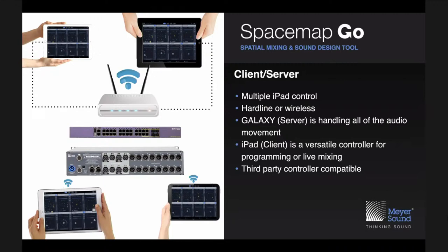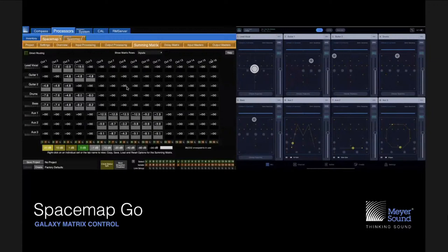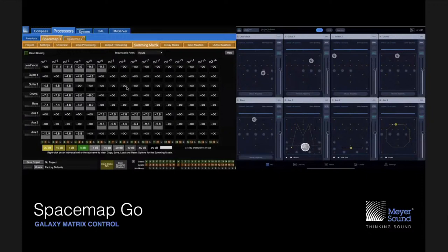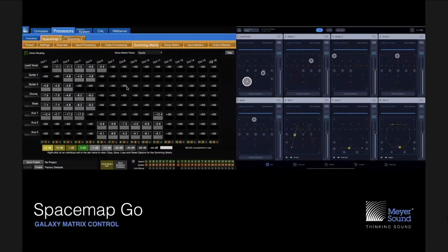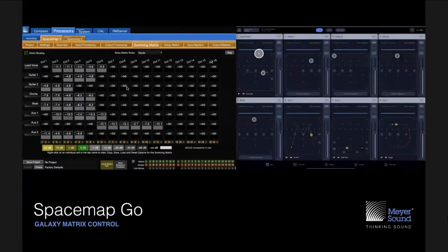You connect your Galaxy processors to a network and use one or more iPads to control the matrix over the network, rather than the traditional approach you'd use with Galaxy and Compass software. With SpaceMap Go, each of the eight areas in the mixed view represents a row of the matrix.